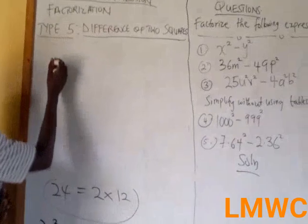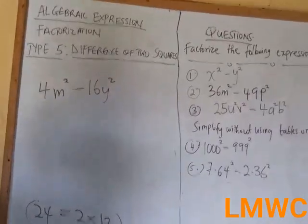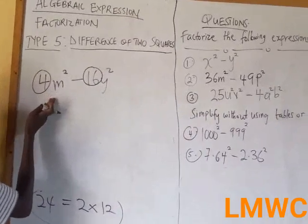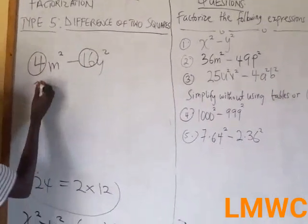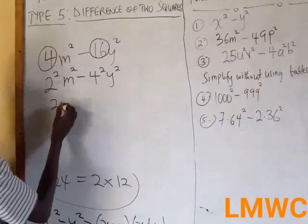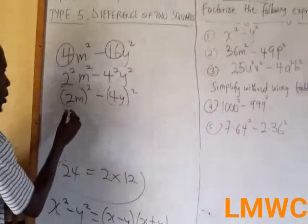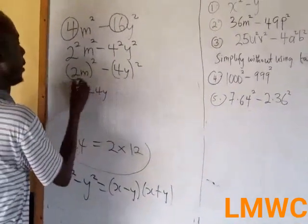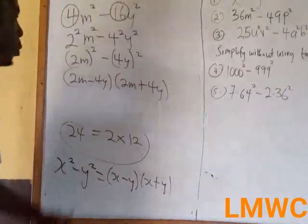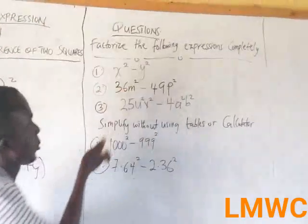For example, take 4m squared minus 16. This is a difference of two squares. Since 2 times 2 is 4 and 4 times 4 is 16, it becomes 2m squared minus 4 squared, which factors as (2m minus 4)(2m plus 4). Once you expand it, you will get the original expression back.